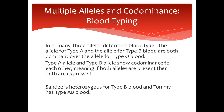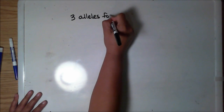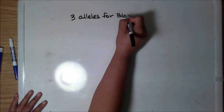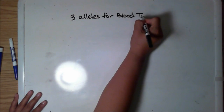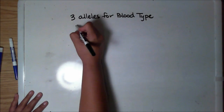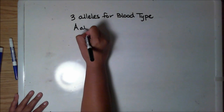Blood typing is a good example to look at two patterns at once: the multiple allele pattern and the codominant pattern. For human blood typing, there are three different alleles that determine blood type. This isn't true for all animals, but it is true for humans.